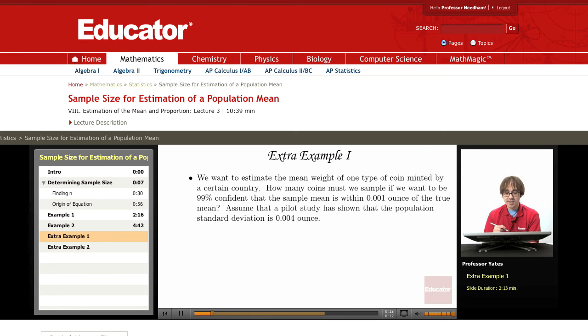So in this example, we want to estimate the mean weight of one type of coin minted by a certain country. How many coins must we sample if we want to be 99% confident? So again, that 99% confidence level.